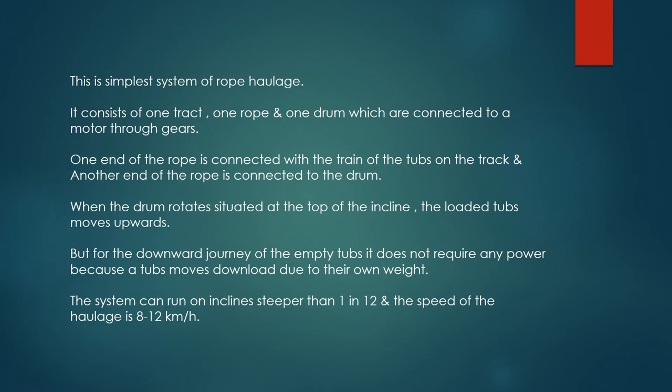This is the simplest system of rope haulage. It consists of one track, one rope, and one drum, which are connected to a motor through gears. One end of the rope is connected with the train of tubs on the track, and the other end is connected to the drum. When the drum rotates, situated at the top of the incline, the loaded tubs move upwards. For the downward journey of empty tubs, no power is required, as tubs move downwards due to their own weight. The system can run on inclines steeper than 1 in 12, and the speed of haulage is 8–12 km per hour.